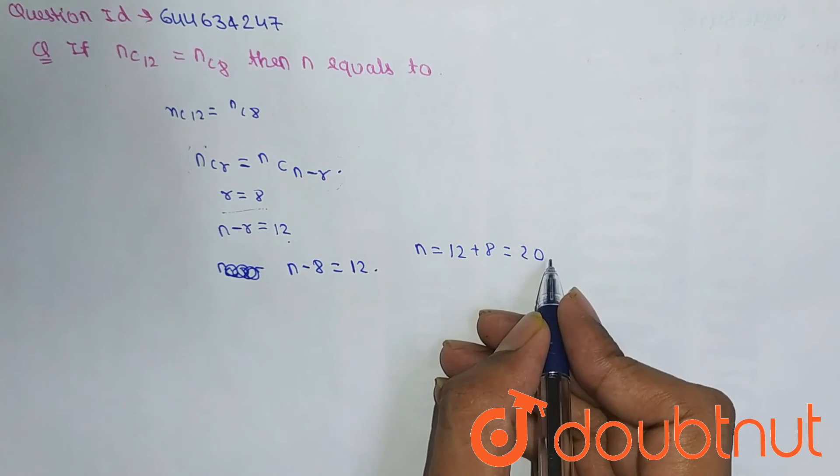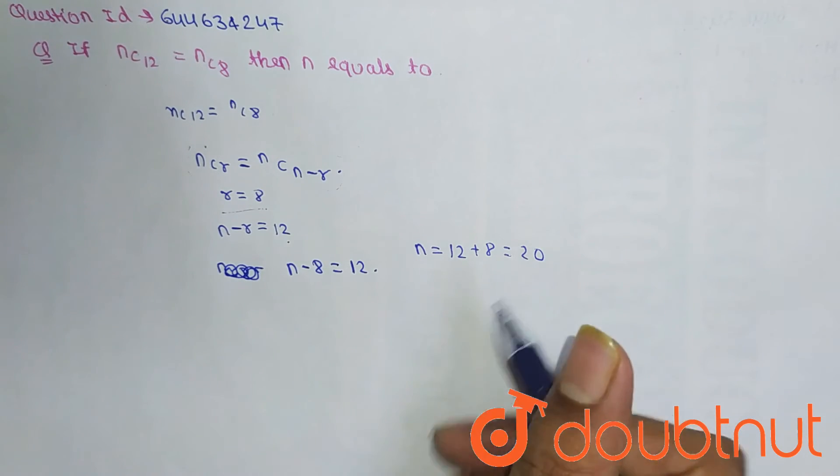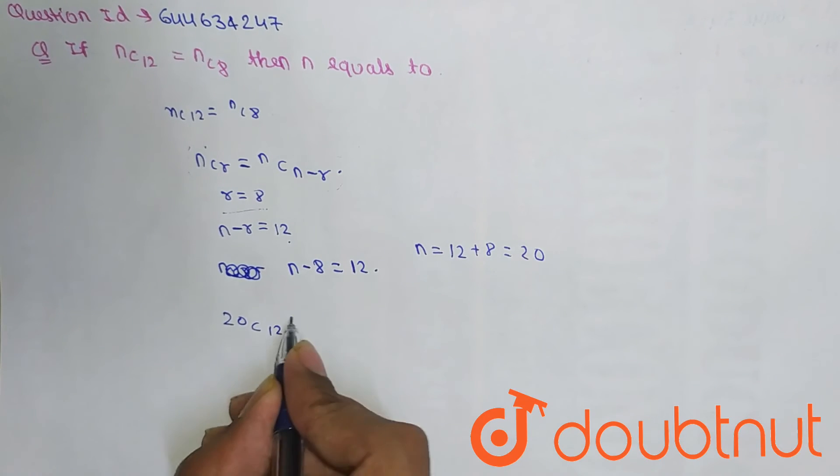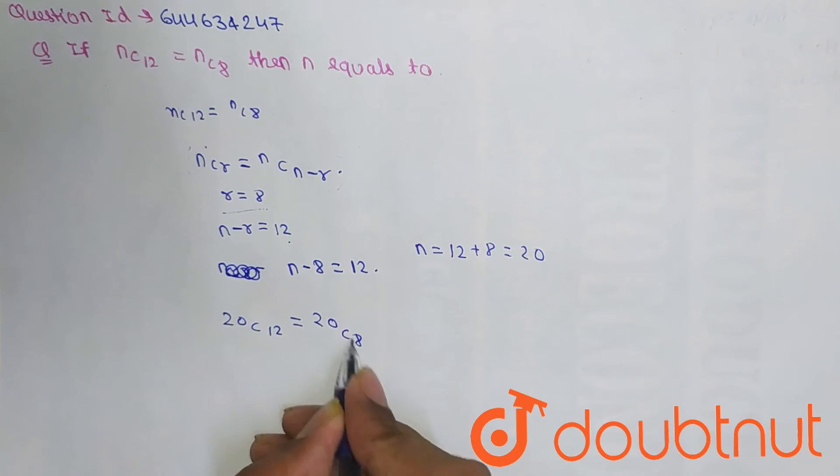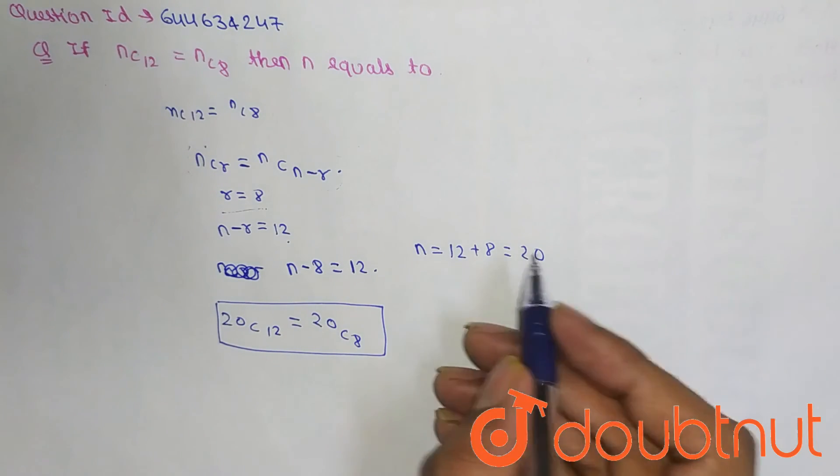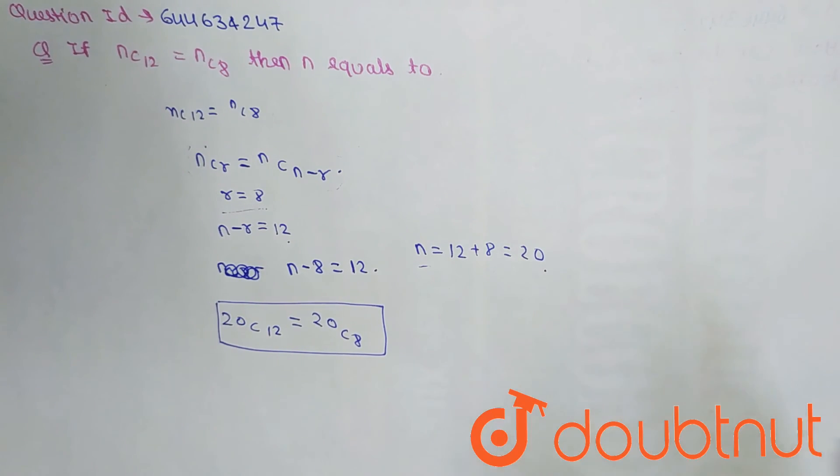So our value of n is 20. Now let's check if this is correct. 20C12 equals 20C8, and as we know, 20C12 does equal 20C8. So the value n equals 20 is correct.